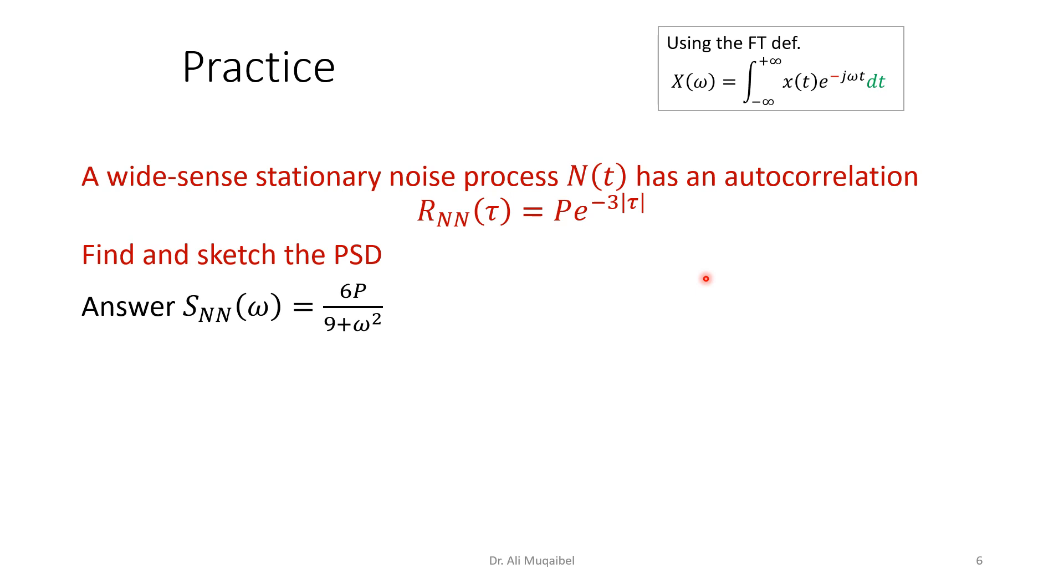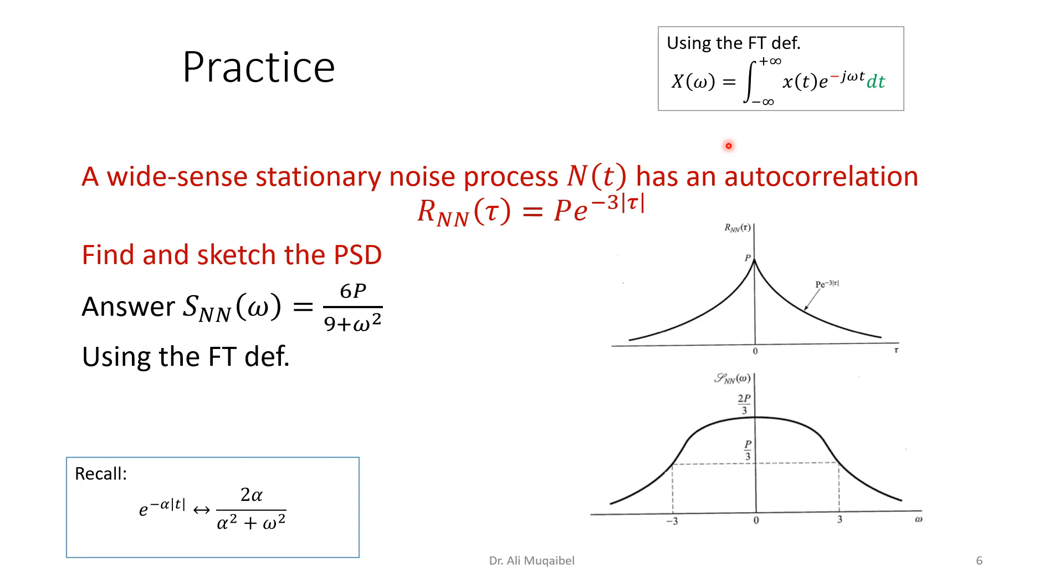The final answer should be 6P/(9 + ω²), and using the Fourier transform definition or tables, you can do the same. Here is a sketch of the autocorrelation function R_NN—it decays with time. The way it looks in the frequency domain is this. Check whether you have this right or wrong. The final answer is here, and the two sketches are shown here. Here's a recall if you want to use the table. If you want to use the integral definition, it's here, or if you want to use the Fourier transform relation.